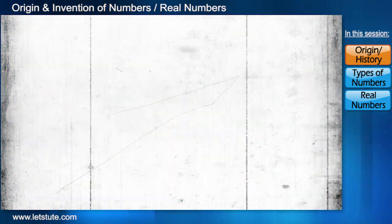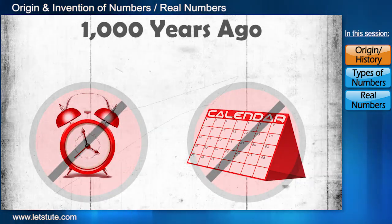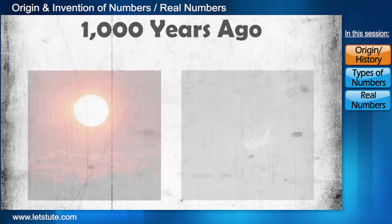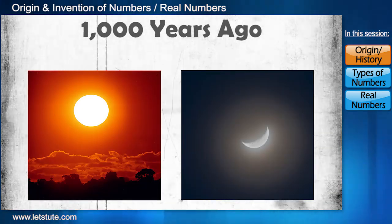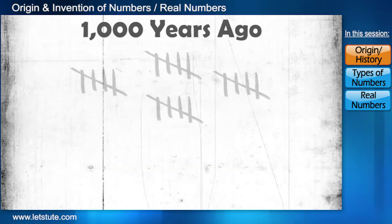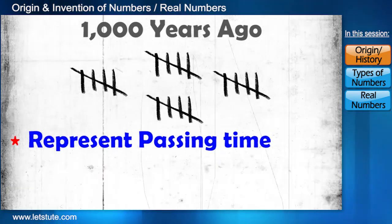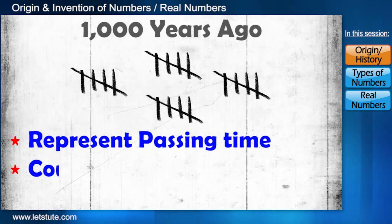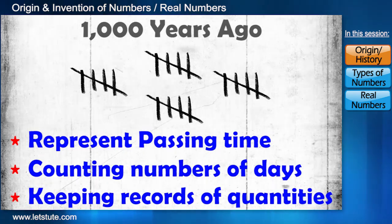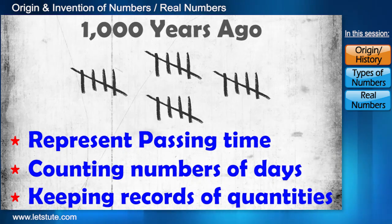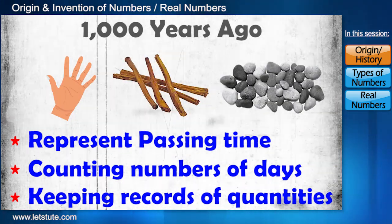Thousands of years ago there were neither clocks nor calendars to keep track of time. The sun and moon were used to identify whether it's morning or evening. People at that time used to count tally marks to represent the passing time. These tally marks may have been also used for counting number of days or keeping records of quantities such as animals.